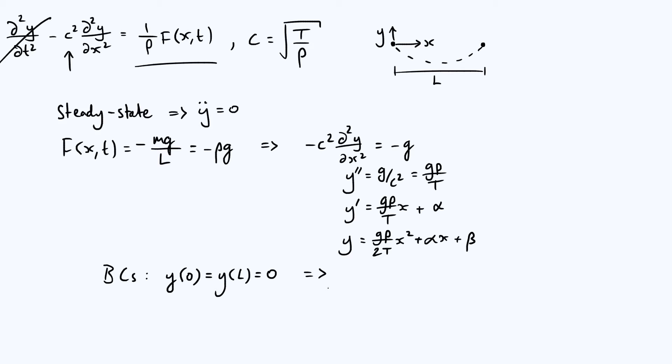So if we apply those boundary conditions, well, the first one, if you substitute 0 into both sides of that equation, you just get 0 equals 0 plus 0 plus beta. So you directly get that beta actually has to be 0. If you apply your second boundary condition, then you are going to get 0 equals g rho over 2t times l squared plus alpha l. You don't have to write beta because then you already decided that that is 0. Because l is not 0, you can divide through by l and find that alpha is just minus g rho over 2t times l.